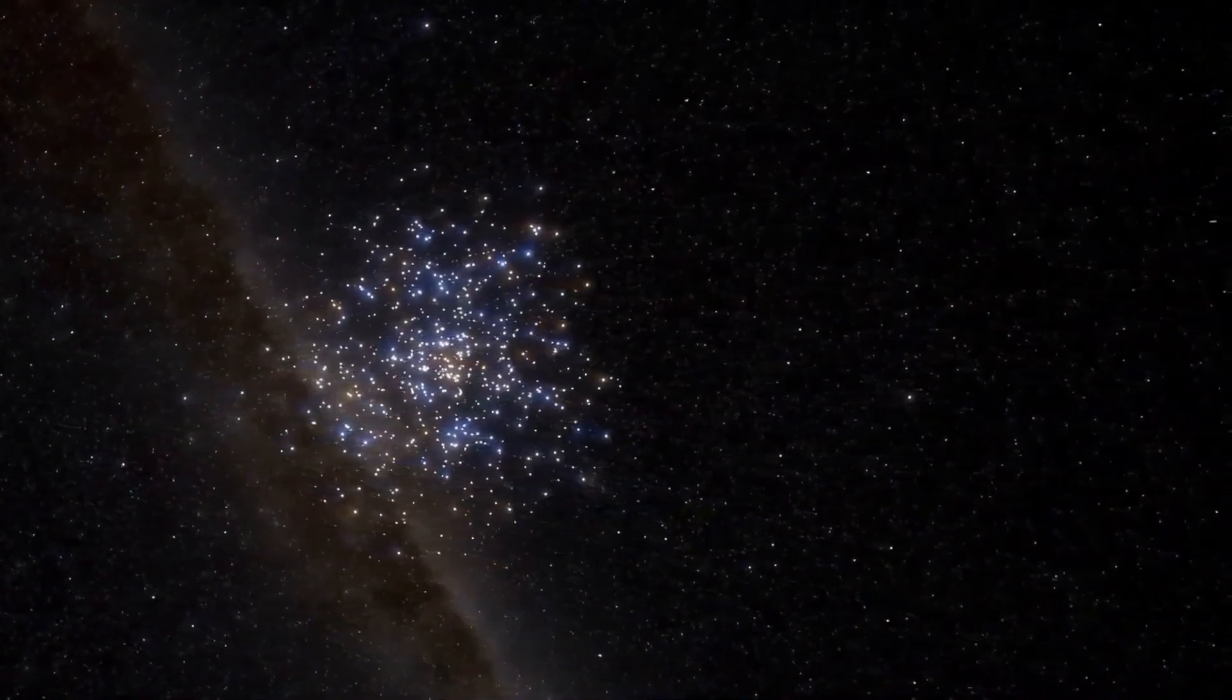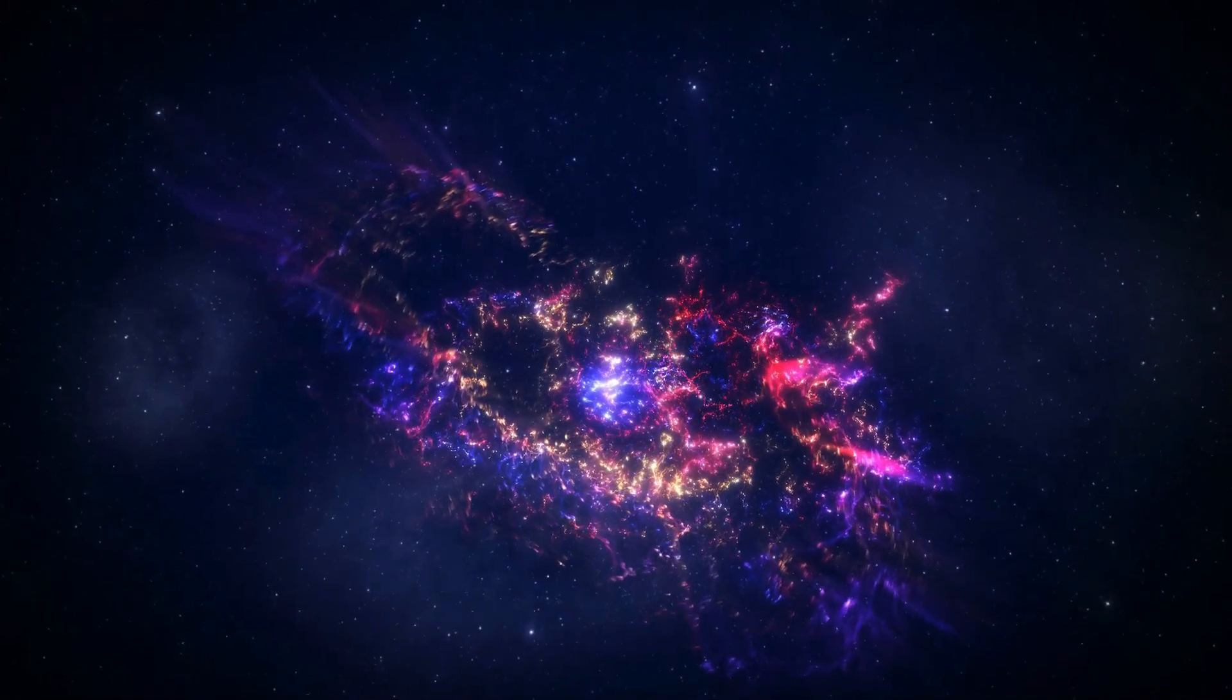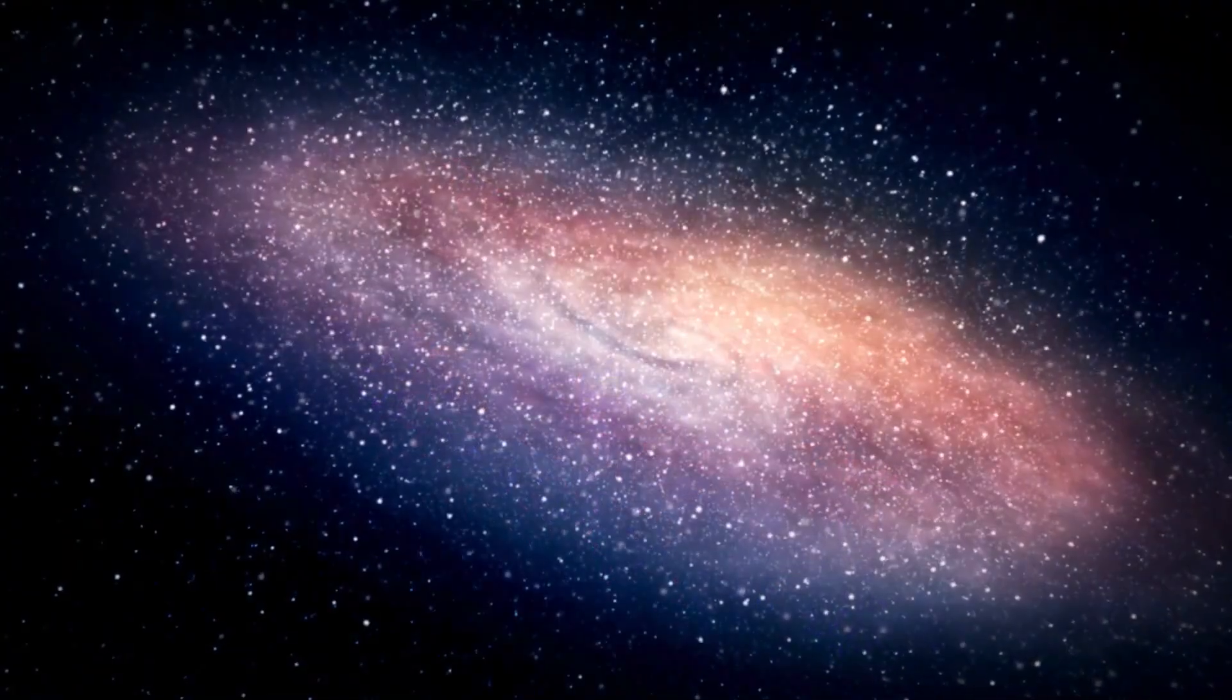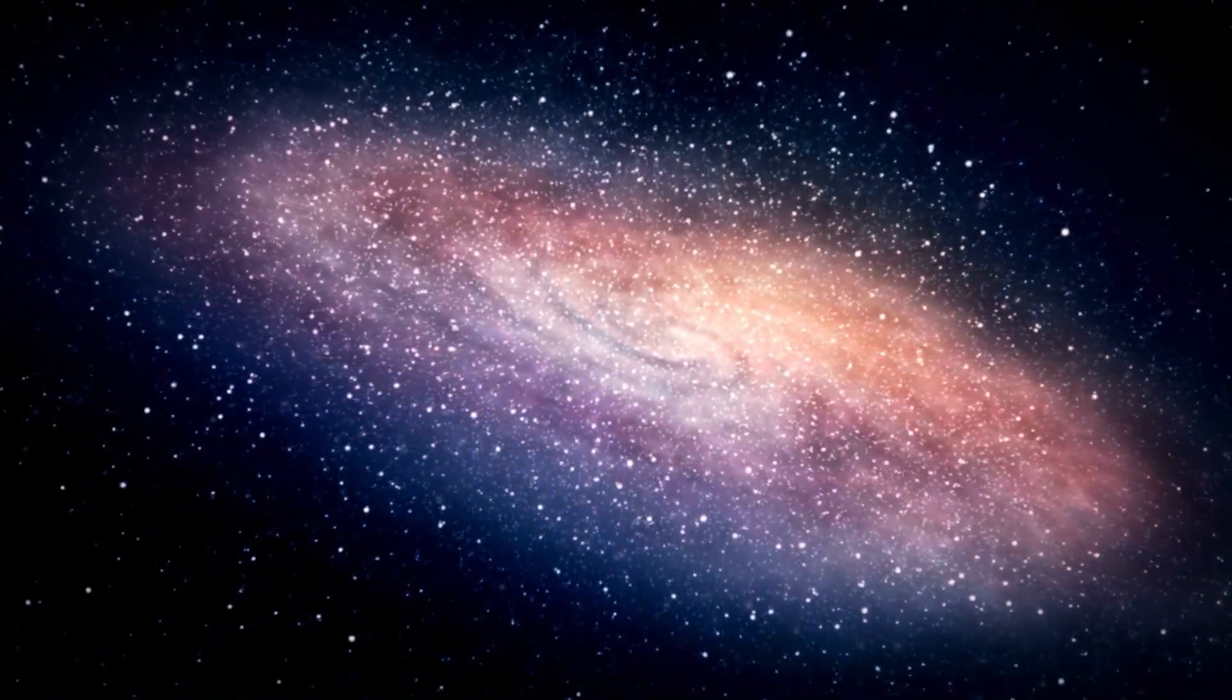Finally, NGC 7320 is a smaller spiral galaxy that appears to be farther away from the group and not interacting as directly with the other galaxies.